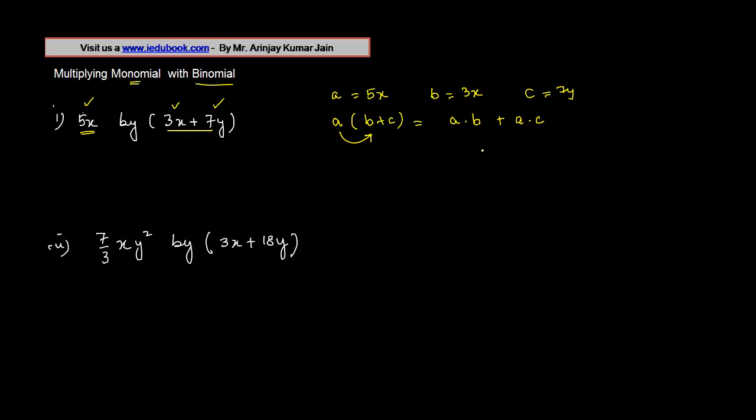Now if I do this to this particular equation, what will it become? a is what here? 5x into b is 3x, plus a, which is again 5x into 7y.